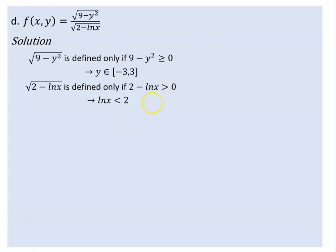So x ranges from minus infinity to 2, meaning x is less than 2. The domain combines both conditions: y is between minus 3 and 3, and x goes from minus infinity up to but not including 2.